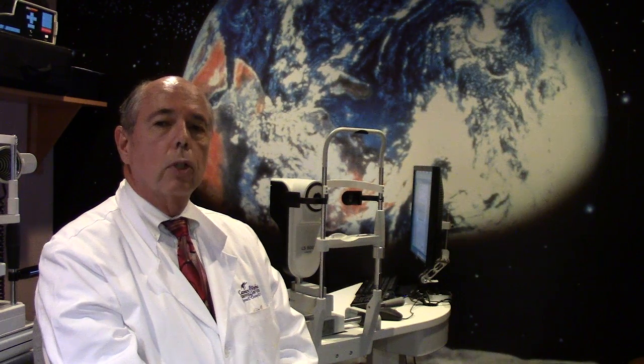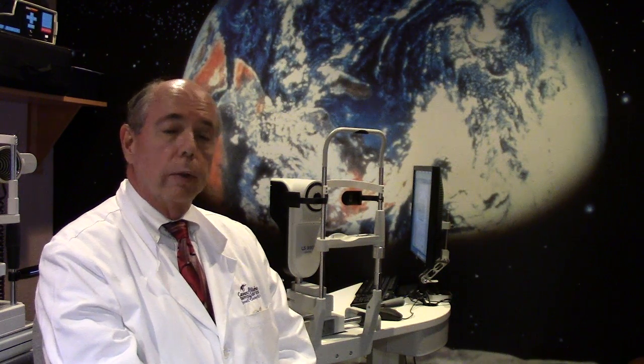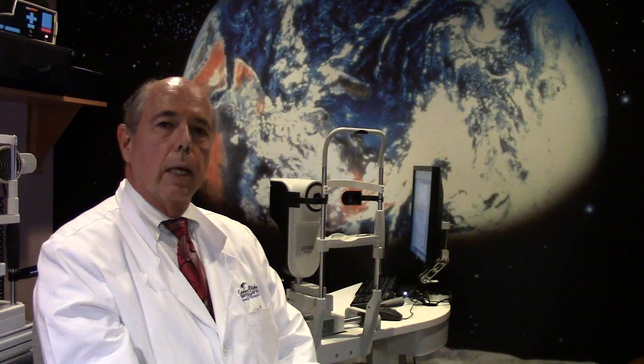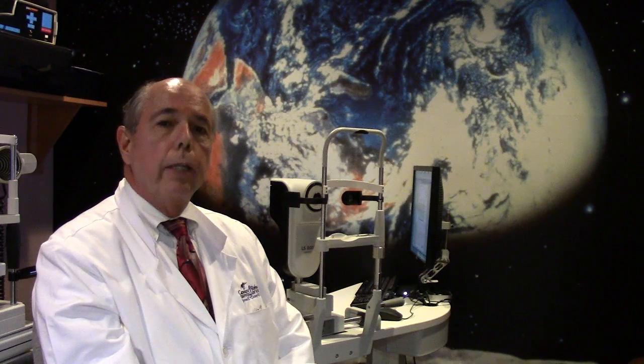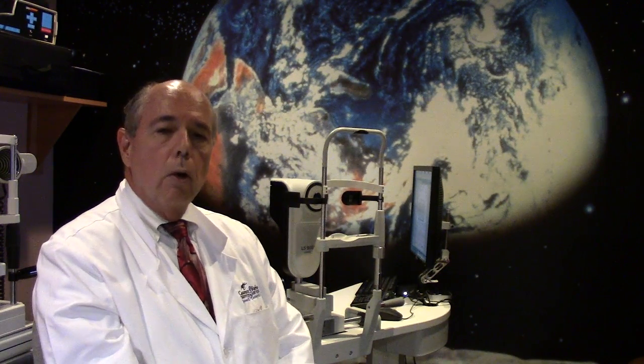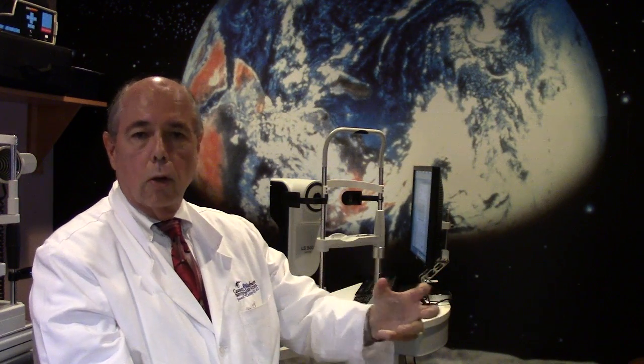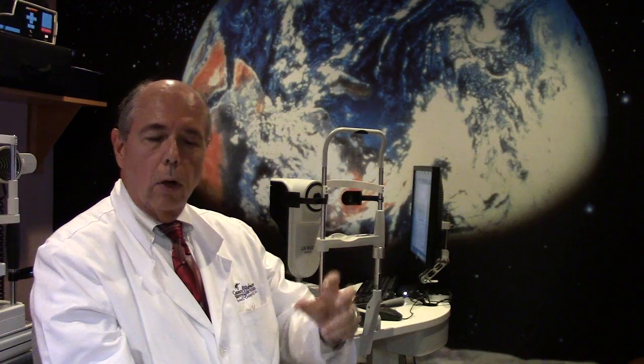So when we work someone up to have cataract surgery who has a lot of astigmatism, we take a lot of measurements of the eye. The curvatures of the eye and the size of the eye, and we have computerized machines that then calculate what strength of lens do we put inside the eye to correct someone who's nearsighted or farsighted.